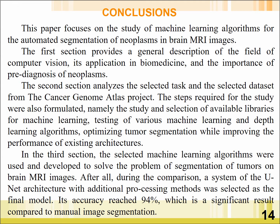In conclusion, this paper focused on the study of machine learning algorithms for the automated segmentation of neoplasms in brain MRI images. In the third section, the selected machine learning algorithms were used and developed to solve the problem of segmentation of tumors on brain MRI images. The UNET architecture with additional processing methods was selected as the final model.